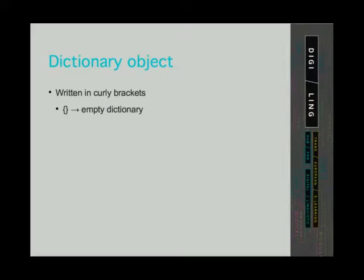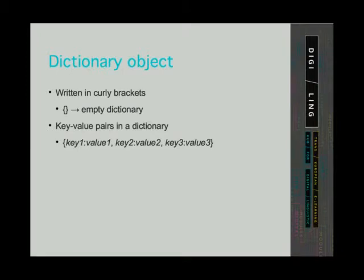Dictionaries are written in curly brackets. We can initialize a dictionary, that is, we can create an empty dictionary. Key-value pairs in a dictionary are separated by commas. A key-value pair is written as key colon value.